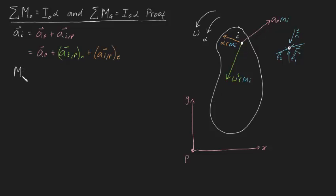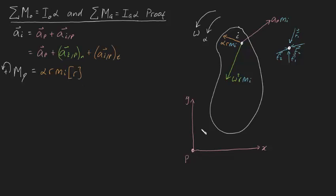Let's find the moment about point P for particle i. We can do this using cross products, but I'm going to simplify by evaluating the scalar moment, assuming counterclockwise is positive. The normal force won't produce a moment because that vector heads directly towards P, so it's excluded. The tangential force will contribute — its magnitude is αr·mi, and we multiply by its perpendicular distance r (the distance from P to i), giving a moment of αr²mi about point P.